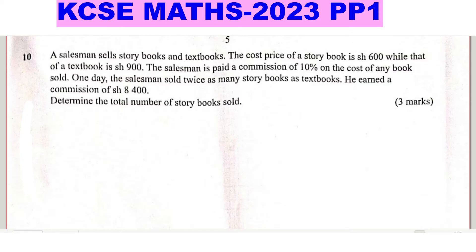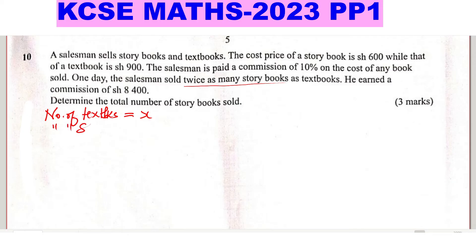Determine the total number of storybooks sold. We shall begin by letting the number of textbooks be represented by x. Since we are given that the salesman sold twice as many storybooks as textbooks, the storybooks will therefore be 2x. So when the number of textbooks is x, storybooks will be 2x. That is the number.